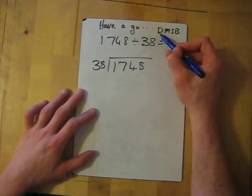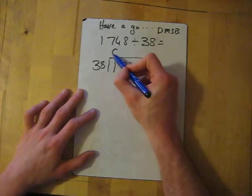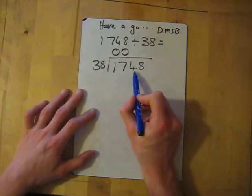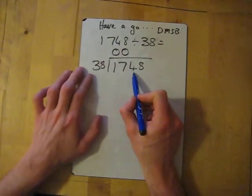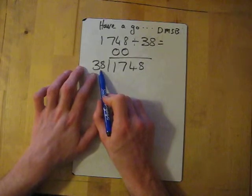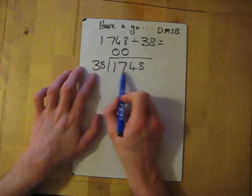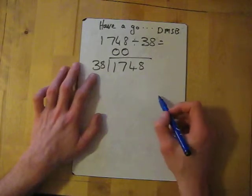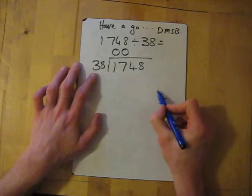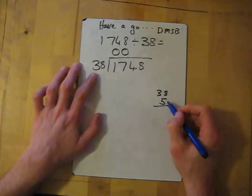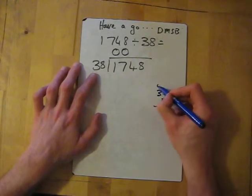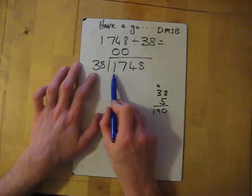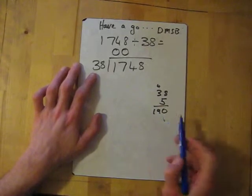So we divide - 38 into 1 doesn't go, 38 into 17 doesn't go, 38 into 174. 10 times 38 would be 380, and that's around half. I'm going to try 5 times and see how that goes. 5 times 38 - 5 times 8 gives me 40, 5 times 3 is 15, so that's 190. 5 times is too many because that's 190. So let's do 4 times. 4 times 8 is 32, 4 times 3 is 12, add the 3 gives me 15. So it fits in 4 times.